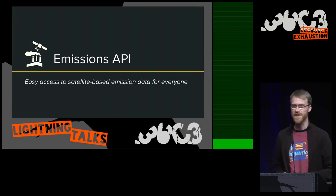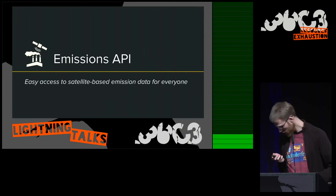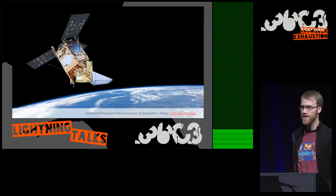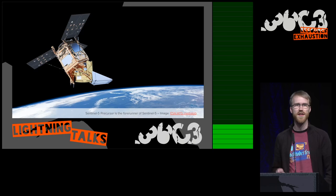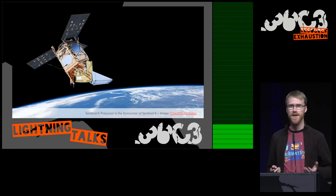I want to talk about an open source project I'm involved in called Emissions API, which is about making emissions data from satellites easier to access. We're talking about Sentinel-5P, a satellite by the European Space Agency. It's part of their Copernicus program, orbiting Earth and gathering data about emissions like methane, carbon monoxide, sulfur dioxide, and so on. The cool thing is that all this data is open — however, open data doesn't always mean the data is easy to access.